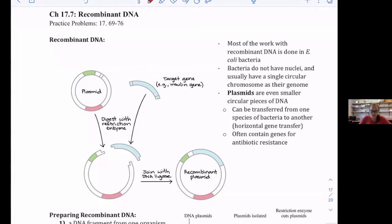Most of this work in recombinant DNA is done with E. coli. It's well studied and they know how it works really well. That's why they use E. coli.